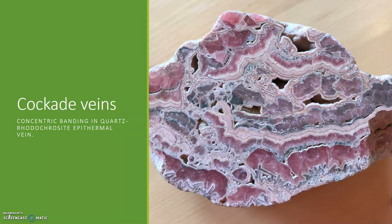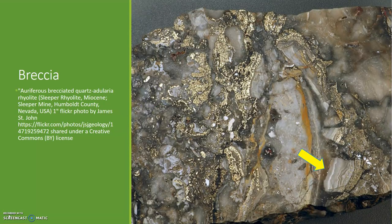This photo shows cockade, coliform, and bladed textures in a quartz — white and gray — and rhodochrosite — pink — epithermal vein. Epithermal vein textures are often extremely complex and represent multiple episodes of boiling and precipitation. The force of rapidly expanding hydrothermal fluids as they rise through the crust can fragment the host rock; minerals precipitate out of solution as a result of rapid pressure drop and cement the clasts together. This image shows a gold-bearing breccia from the low sulfidation Sleeper Mine in Nevada, USA. Note the fragments of crustiform banded veins in the bottom right corner of the image.